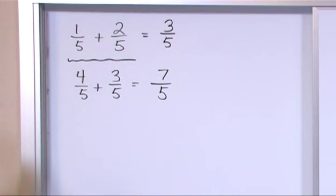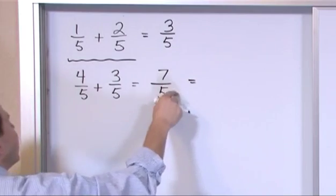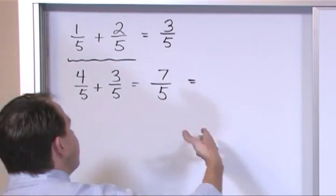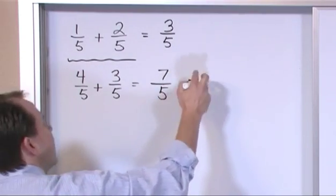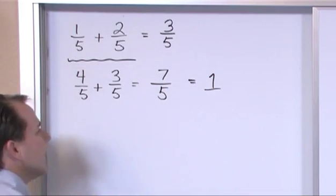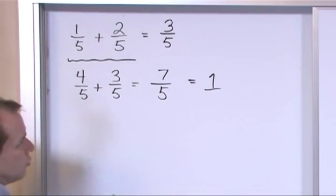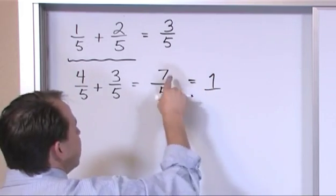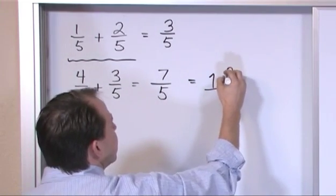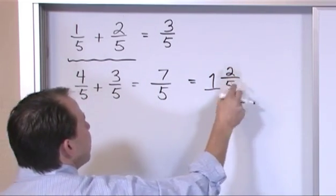And you can leave it like that, but you realize this is an improper fraction, so you should try to change it to a mixed fraction. How many times will five go into seven? We'll go one time. And so that's one times five is five. The difference between seven and five is two, so your remainder is two. And you always write it out of five.